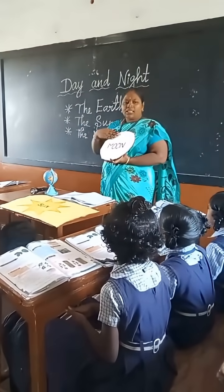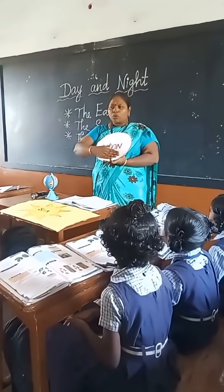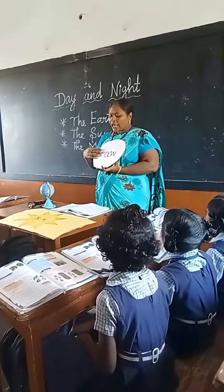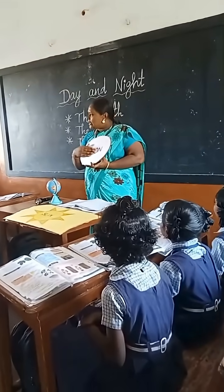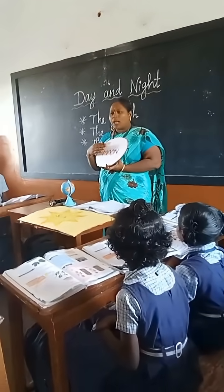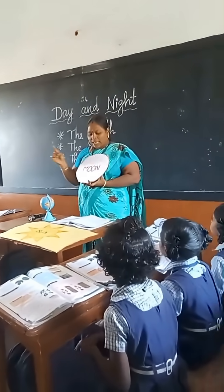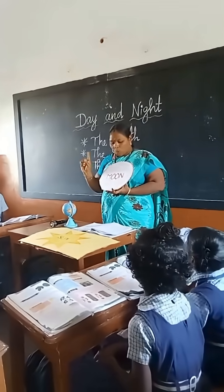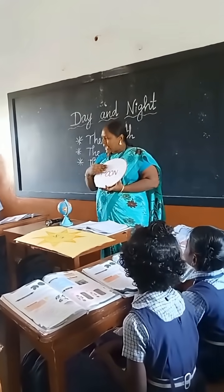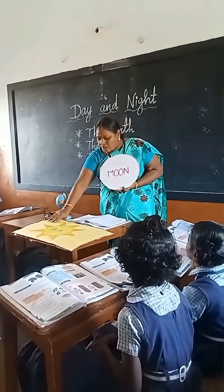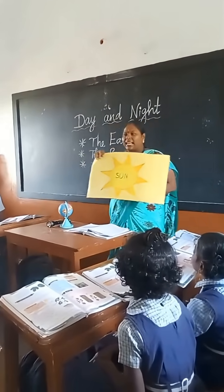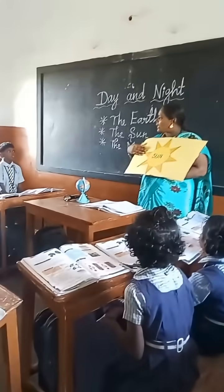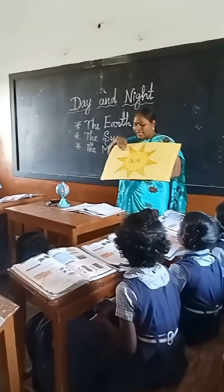Children, the moon goes around the earth. It does not have light of its own. It shines because it reflects the sunlight.